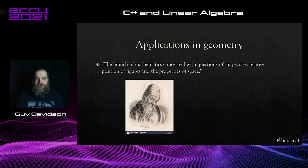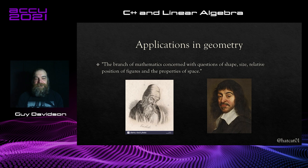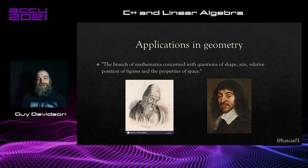Let's look at some applications in geometry. Geometry is my main use of linear algebra — it's the branch of mathematics concerned with questions of shape, size, relative position of figures, and the properties of space. I want to draw attention to two people: Euclid and Descartes. Euclid's Elements contains 13 books — it's actually quite an easy read and there are a lot of pictures. Up until the beginning of the last century, it was presumed that anyone educated would have read it. Here's the first of 48 propositions: how to construct an equilateral triangle given a finite straight line — you create two circles of the radius of the line, put their centres at either end, and where those circles intersect is the third point.